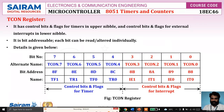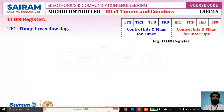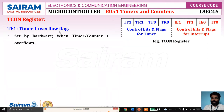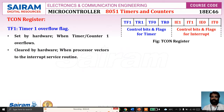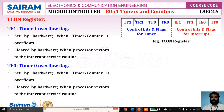TF1 is the Timer 1 overflow flag. It is automatically set by hardware when the timer or counter overflows — that is, when it reaches the maximum count and then becomes zero, which is called overflow. When this happens, the flag is set and again automatically cleared by hardware when the processor vectors into the interrupt service routine. Similarly, TF0 is the same flag for Timer 0. These two — TF1 and TF0 — are called flag bits.